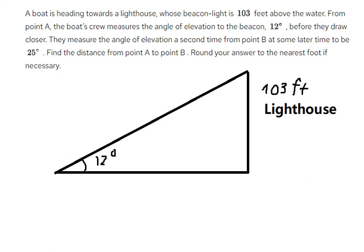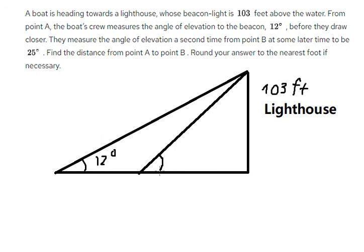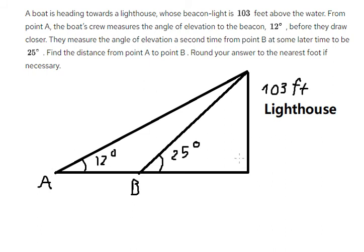Later, from point B, they measure the angle of elevation again, and this angle is 25 degrees. So they want to find the distance from point A to point B. We know that this involves a right triangle.